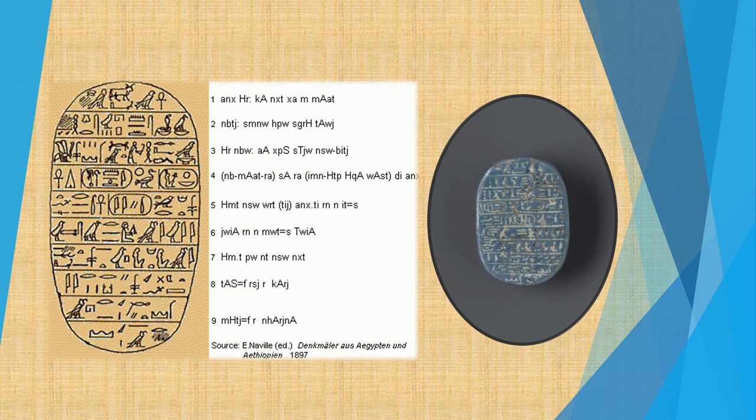Live Horus, mighty bull appearing in truth, he of the two ladies. He establishes laws, he pacifies the two lands. Gold Horus, great of strength, who smites the Asiatics, the king of upper and lower Egypt, lord of the two lands.